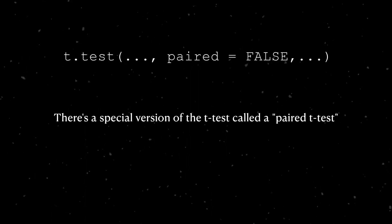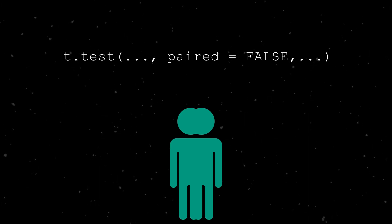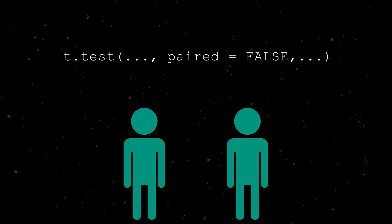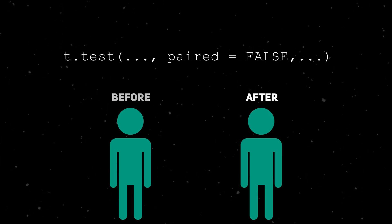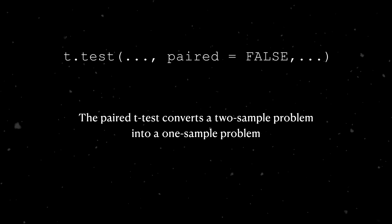There's a special version of the t-test called a paired t-test. We can do a paired t-test when we measure two measurements from a single sample of people. The two groups that are being compared are the before and after measurements, or baseline and final measurements, whatever term makes more sense to you. It essentially converts a two-sample problem into a one-sample problem.